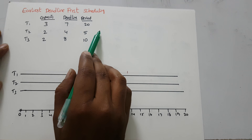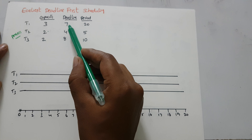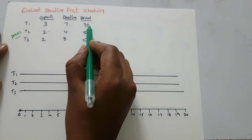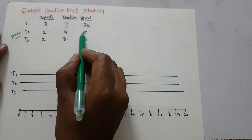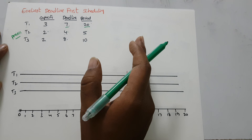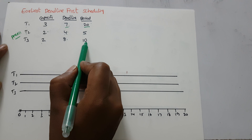In Earliest Deadline First scheduling, three processes are given: t1, t2, and t3. The capacity of t1 is three units, t2 is two units, and t3 is two units. The deadlines are seven, four, and eight respectively. t1 has to execute three units over a period of twenty, t2 has to execute two units over a period of five with a deadline of four, and t3 has to execute two units over a period of ten with a deadline of eight.